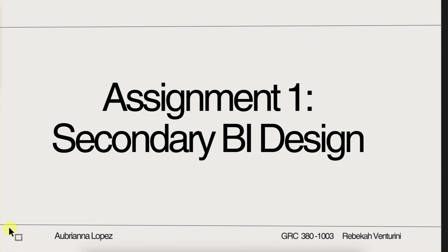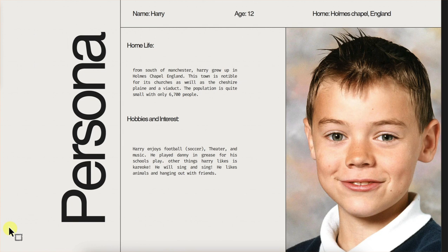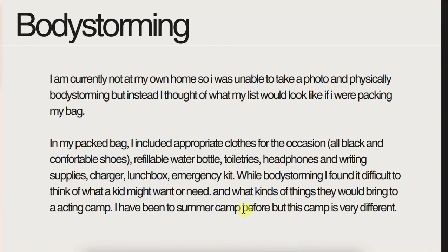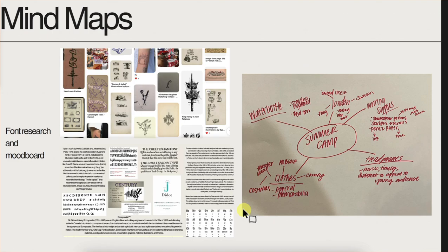Next up is Aubriana. Good looking first slide. Thank you. Here is your persona — this is Harry. The more I look at this kid, I swear this is a picture of a famous actor as a kid. I love his hobbies. Make sure you spell check — you have a lot of punctuation and capitalization things mixed up, so before you put this on your portfolio, just make sure you double check all your spelling and grammar. And here's your body storming explanation and ideas. Here's your mind map, and I'm not really seeing any Arts and Crafts stuff on there. I see a little bit, but I'm seeing more way older stuff and some tattoo inspiration.